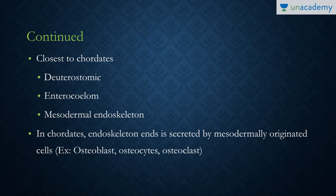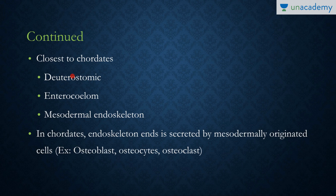Why are they considered the closest to the chordates? First, they are the first phylum to have deuterostomic development — the first opening in the embryo, the blastopore, converts to the anus, and the mouth comes later. 'Deutero' means second and 'stoma' means mouth, so the mouth comes second. They also have an enterocoelom, unlike previous phyla where the coelom was schizocoelous.